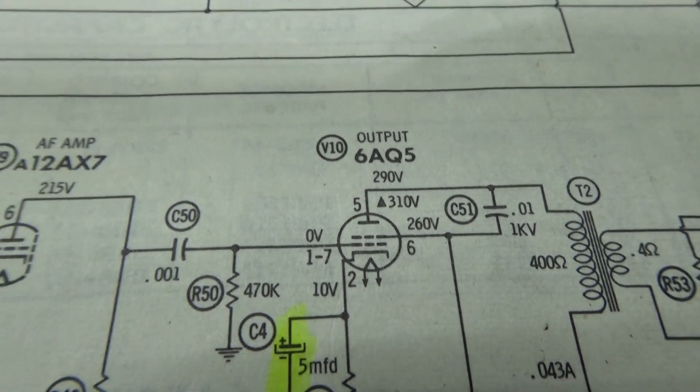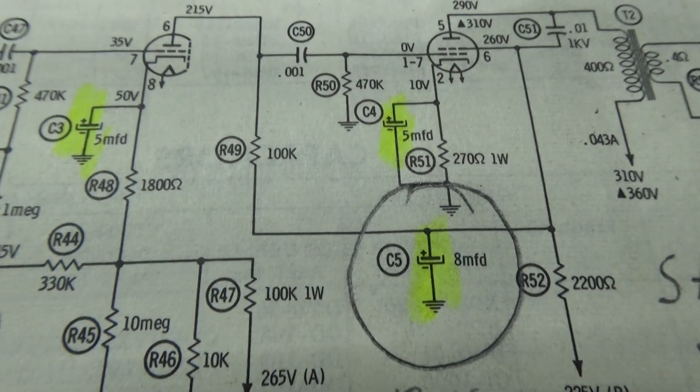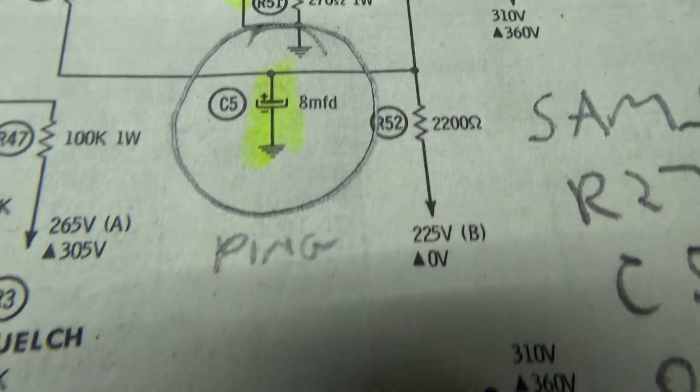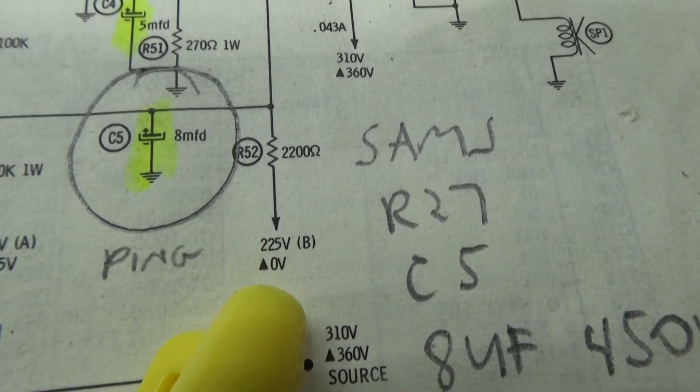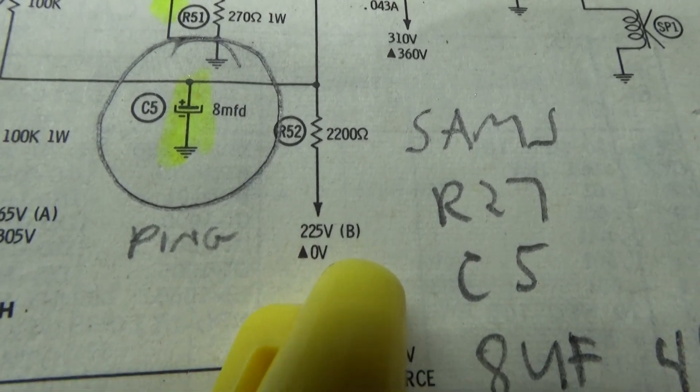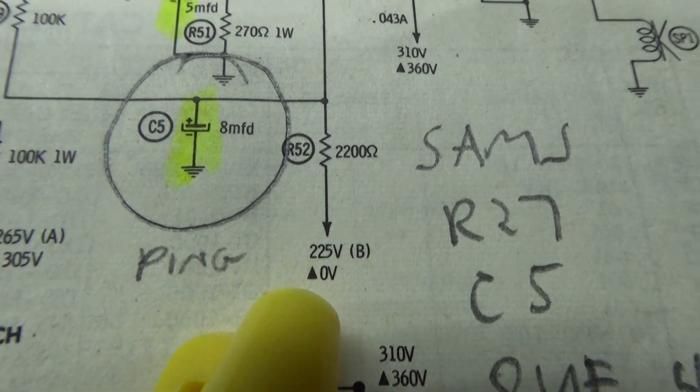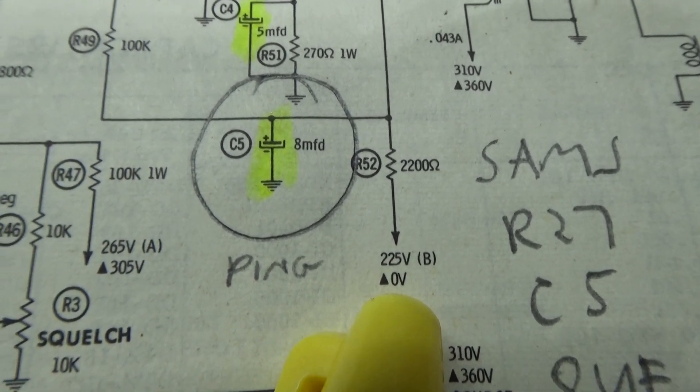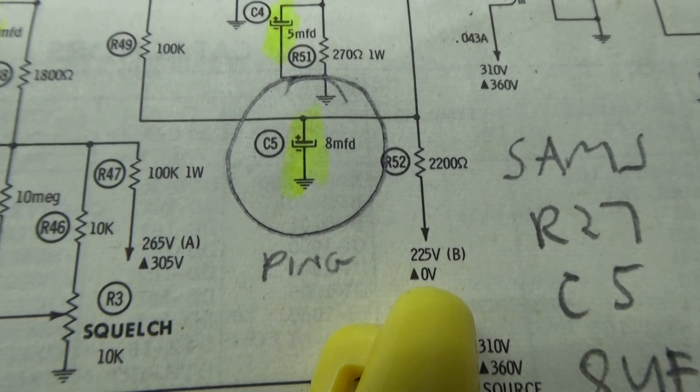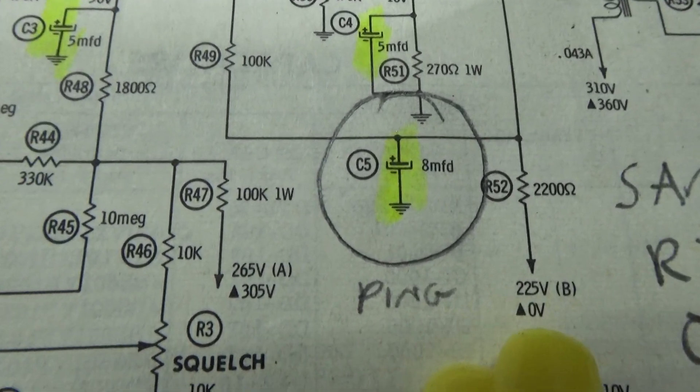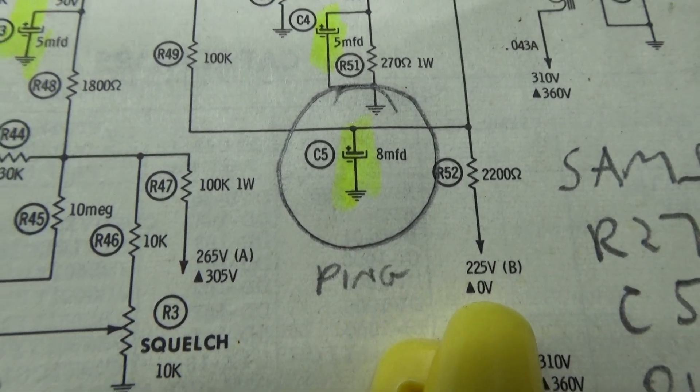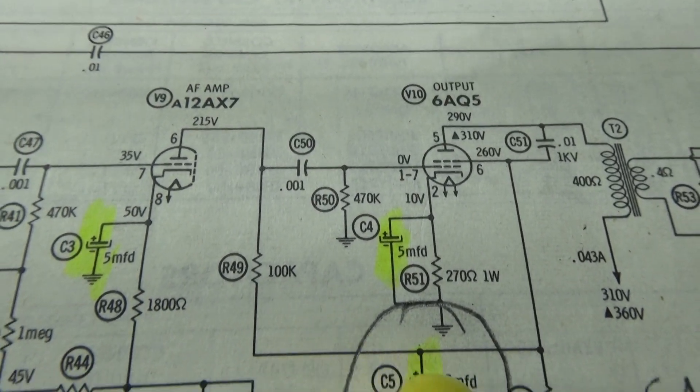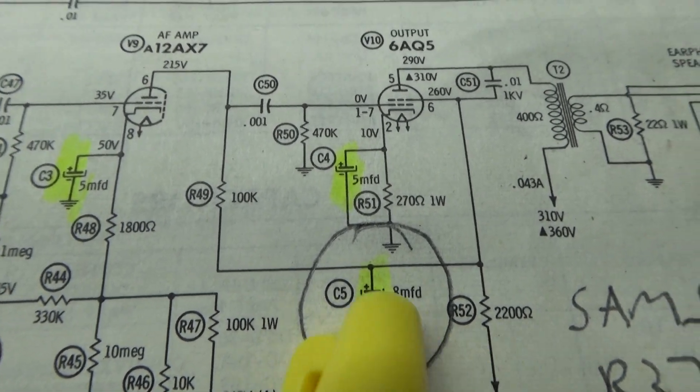How the ping works is that if you see that 225 volt B, and then that triangle which is zero, that triangle indicates transmit. So when you key down the Browning radio transmit, it takes the voltage off of that point on the receiver. Basically, you are turning off the audio final tube by removing that voltage, and what the ping cap does...